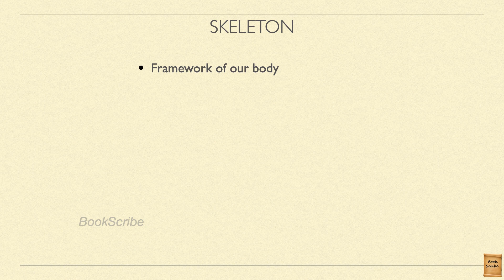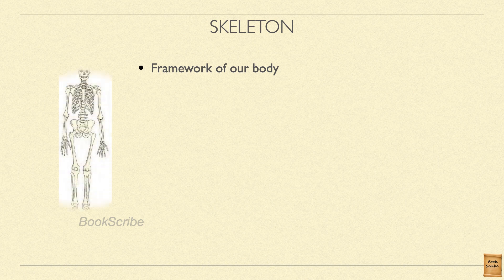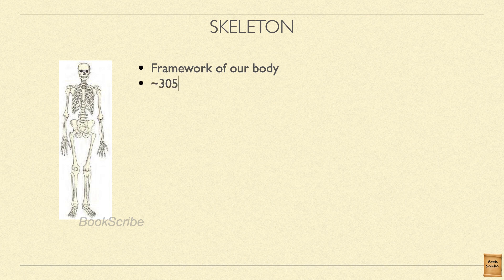Like that, the initial framework of our body is the skeleton, which consists of bones. The human skeleton at birth — for a baby — will be around 305 bones. As the baby grows and adulthood is reached, the bones will join together.